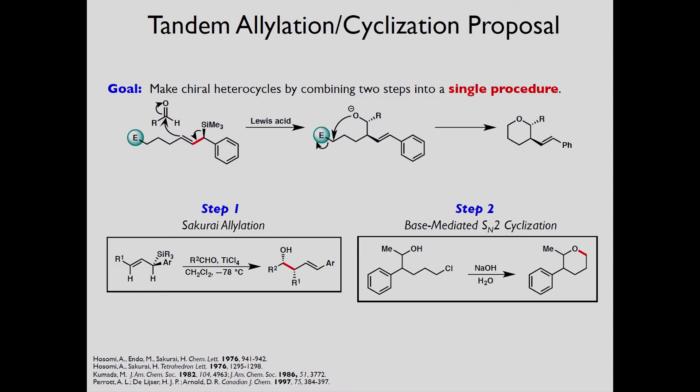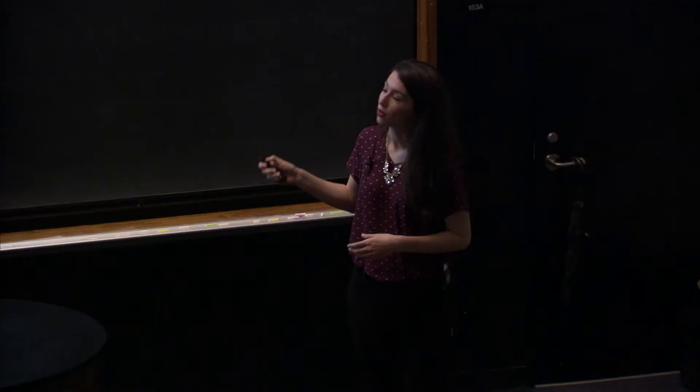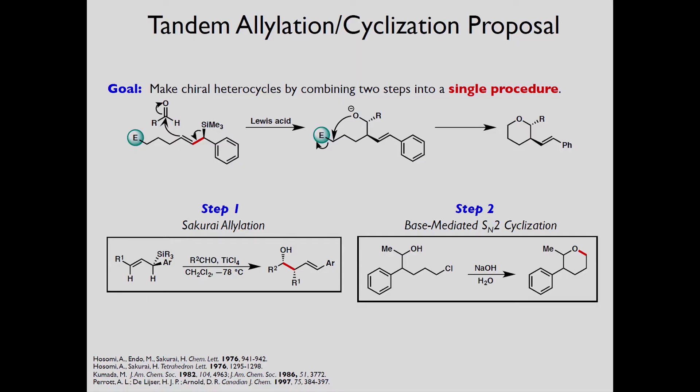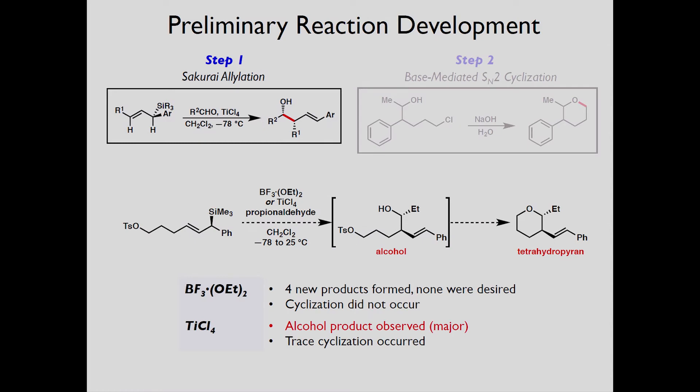In order to do that we believed that we could use a tandem allylation cyclization reaction. So here we have the allylation step in which the chiral allosylane reacts with an aldehyde forming a carbon-carbon bond. The chiral information from this carbon is transferred to the adjacent carbon atom and then the pendant chloride electrophile is kicked off when the oxygen forms the cyclic structure. There's good precedent in the literature for both of these steps. The first step is a Sakurai allylation which has been known to take chiral allosylanes to chiral alcohol products and the same alcohol motif with the pendant electrophile has been known to undergo SN2 cyclization reactions.